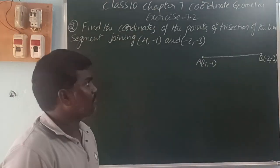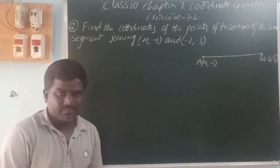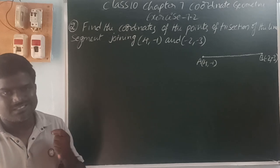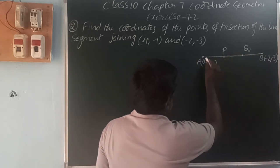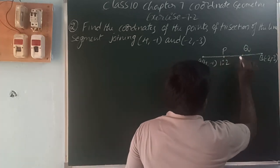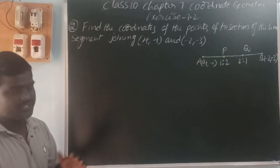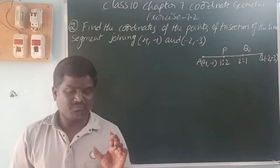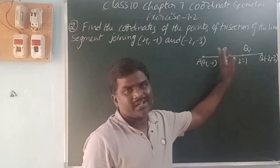Next, find the trisection points of the line segment joining 4 comma minus 1 and minus 2 comma minus 3. The line segment AB is divided into 3 equal parts. The points are called trisectional points. Let P and Q be the trisectional points. AP equals PQ equals QB. These two points divide the line segment into 3 equal parts.